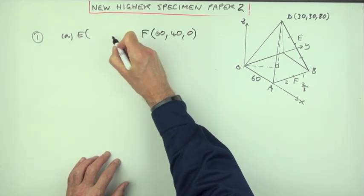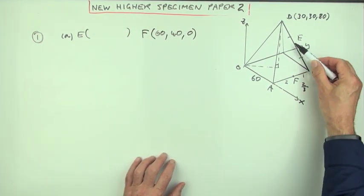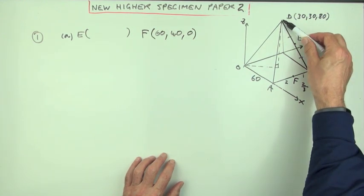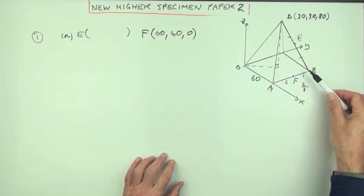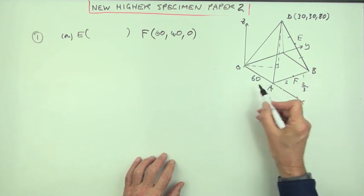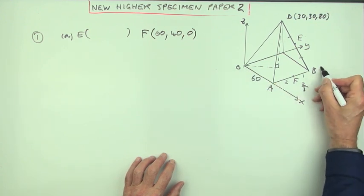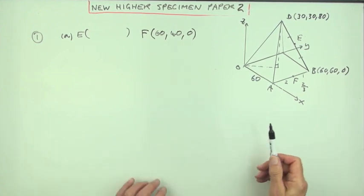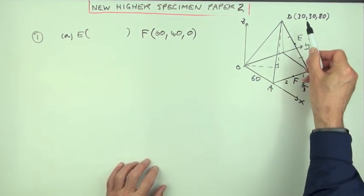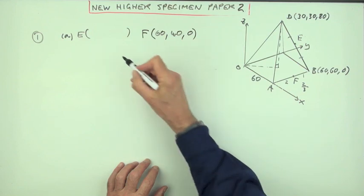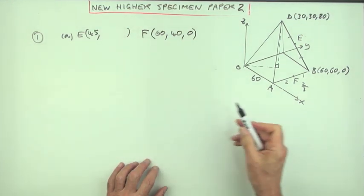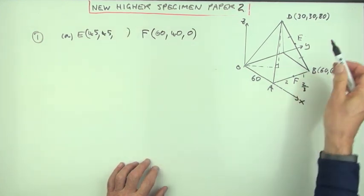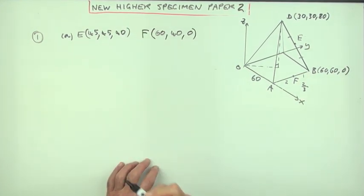Now, E is the midpoint of a side, so the best thing to do is just get the coordinates of the endpoints and go halfway between them. So where's B again? 60, 60, but 0. So E's simply halfway between them. Halfway between 30 and 60, that's 45. Halfway between 30 and 60, that's 45. Halfway between 80 and 0, that's 40.